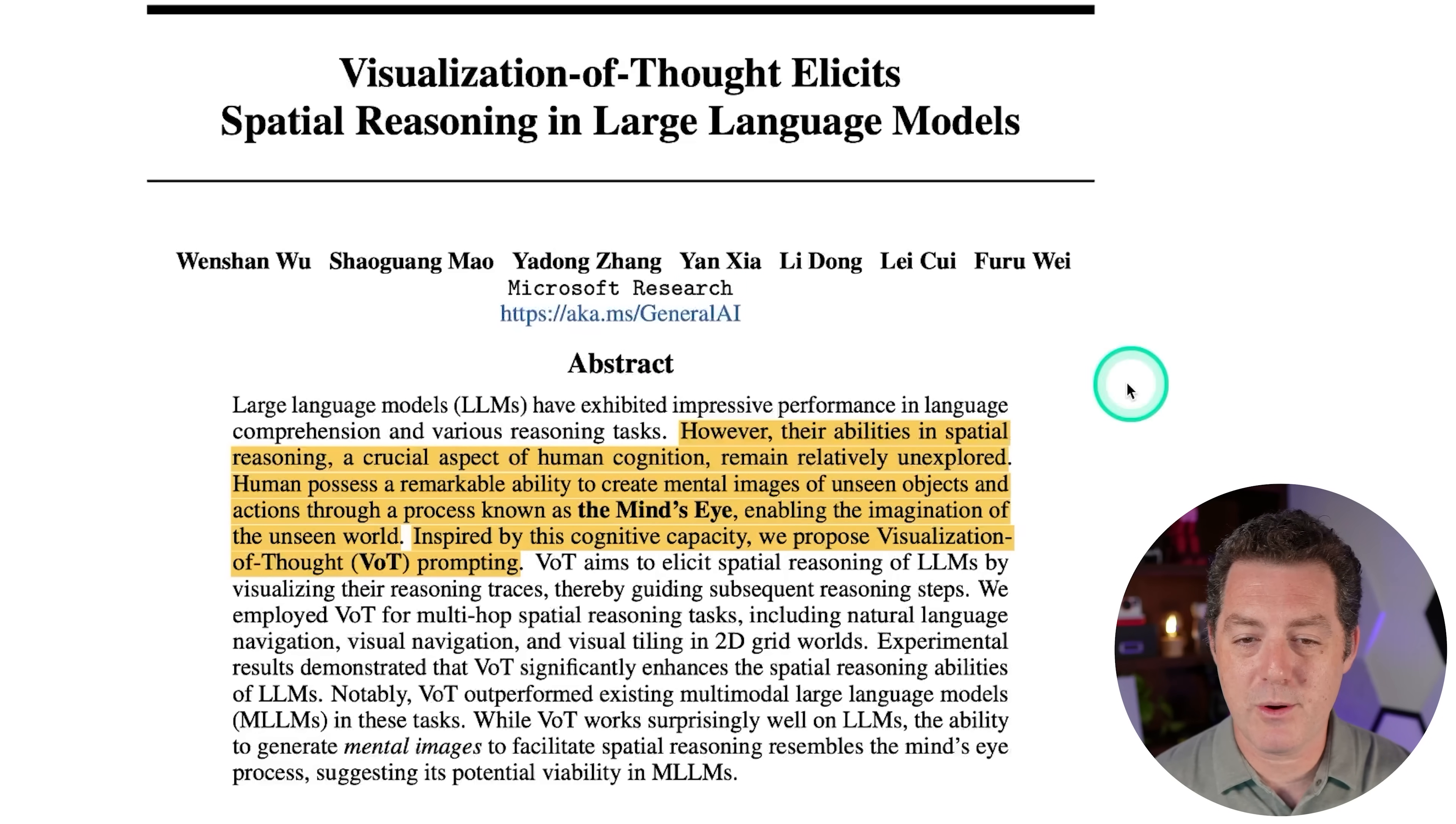So this is out of Microsoft Research. In the beginning, it talks about how large language models are really great. However, their abilities in spatial reasoning, a crucial aspect of human cognition, remain relatively unexplored. Humans possess a remarkable ability to create mental images of unseen objects and actions through a process known as the mind's eye, enabling the imagination of the unseen world. Inspired by this cognitive capacity, we propose visualization of thought prompting. And I'm going to show you why this will translate into a large action model, because right now it's called visualization of thought. But if we take this technique and we apply it to a user interface, we can actually control that user interface. And that's essentially what a large action model is.